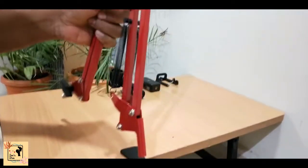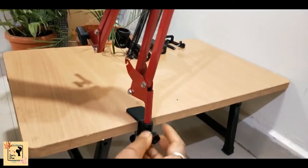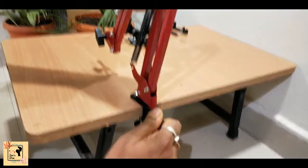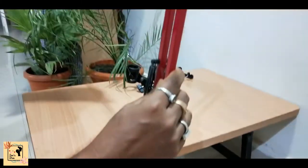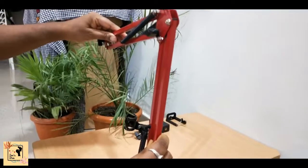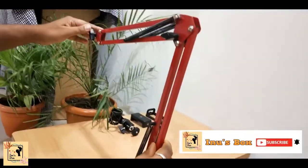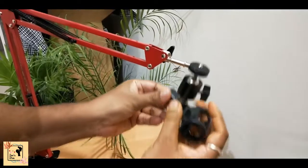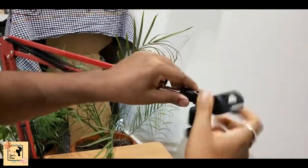This is one end which attaches the clamp. And the other end fits the holder including the ball head and the mobile holder.